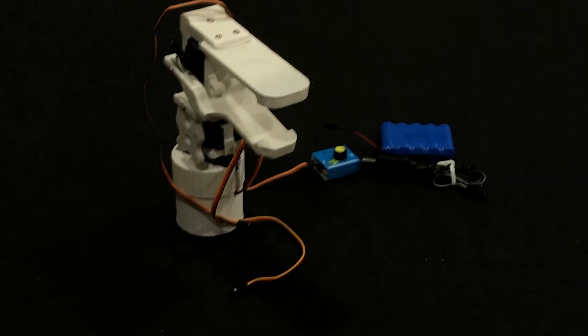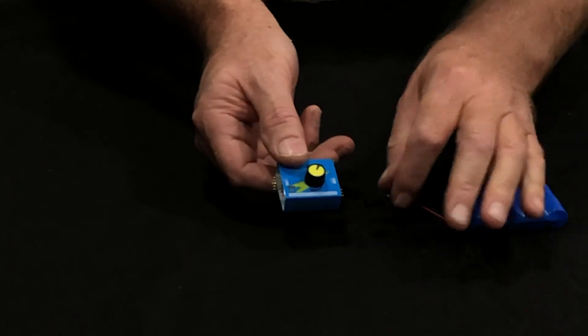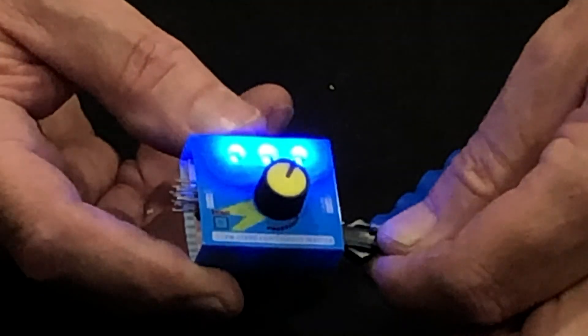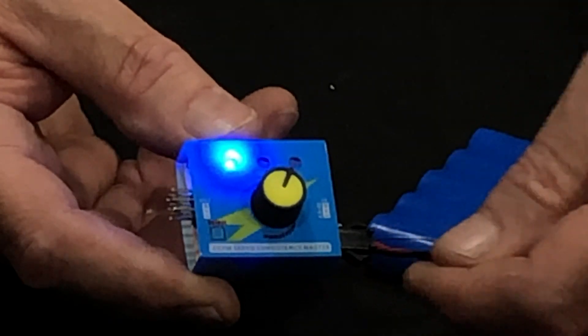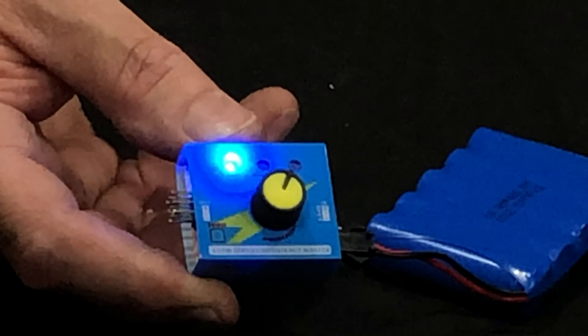Now let's add power. We've got our battery pack and our controller, and the black and red wires plug into the side just like that. Black is negative, red is positive.